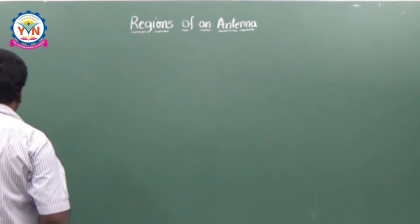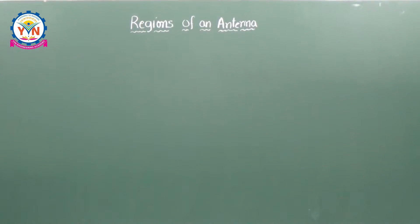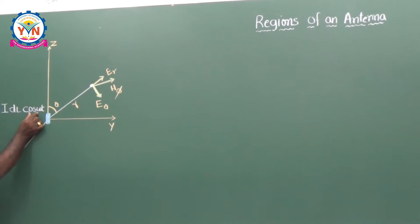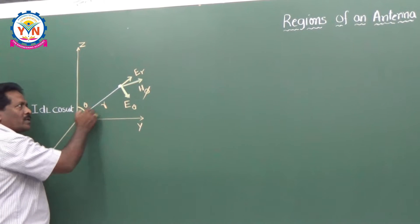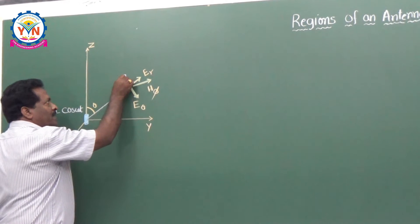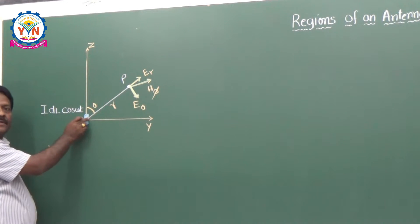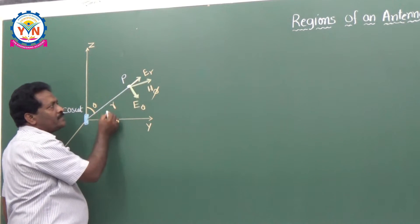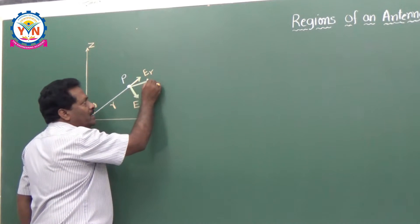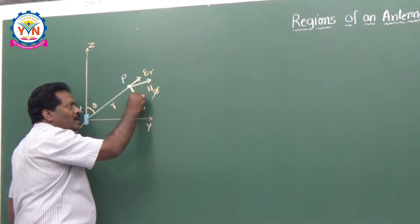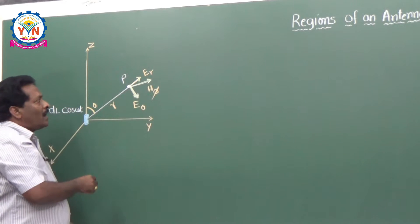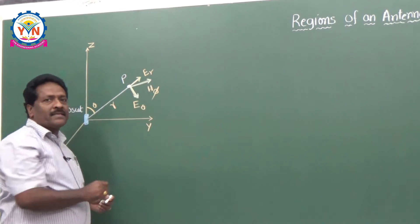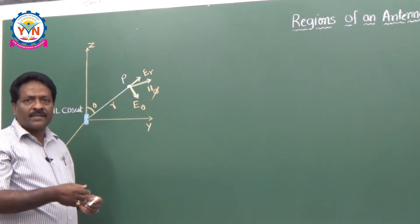Let me say very clearly, once again — here is an alternating current element, ideal cos(ωt). It is radiating information towards point P, which is at a distance R from this element. There are three fields of this antenna: one in the radial direction E_R, one H_phi in the phi direction, and one more electric field in the theta direction. Taking the expression for H_phi as the basis, we are going to see the regions of an antenna.